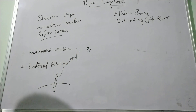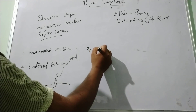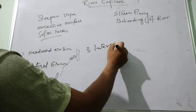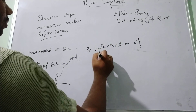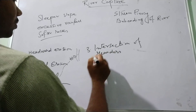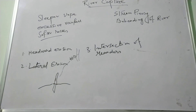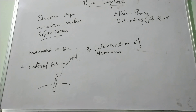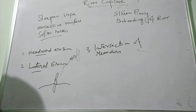Third, there is river capture due to the intersection of meanders. In the old stage, or the last stage of the mature stage of the river, the meanders become enlarged, and two closely spaced rivers may intersect each other and join. So these are the basic causes of river capture: headward erosion, lateral erosion, or the intersection of meanders.